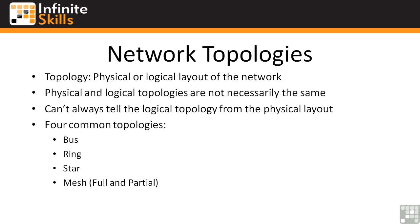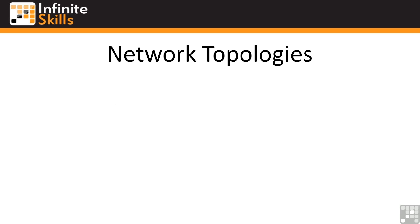First we're going to talk about the four common topologies you will see on local networks and wide area networks. They are the bus, ring, star, and mesh topologies. The mesh is somewhat divided between the full and the partial mesh topologies. Each topology has its own advantages and disadvantages, and we'll go into each of these over the next few slides.